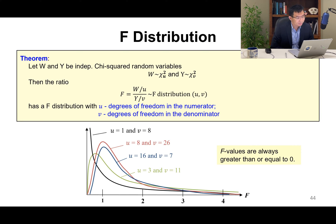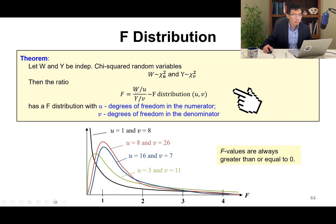So what is the F distribution? Here is a theorem: let W and Y be independent chi-squared random variables, where W is chi-squared with U degrees of freedom and Y is chi-squared with V degrees of freedom. Then the ratio F = (W/U) / (Y/V) follows the F distribution with U and V degrees of freedom, where U and V are the degrees of freedom in the numerator and denominator respectively.